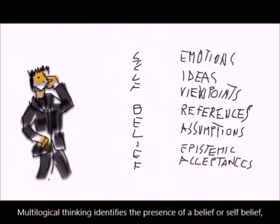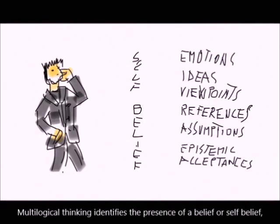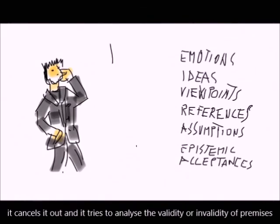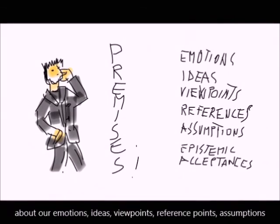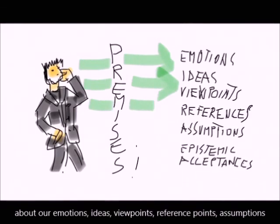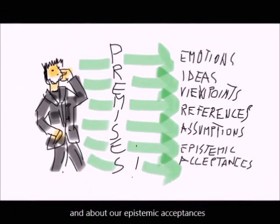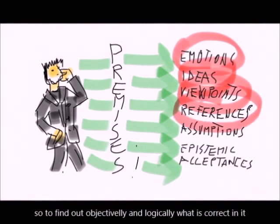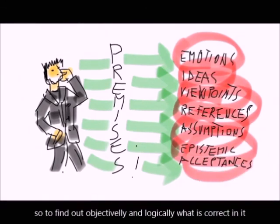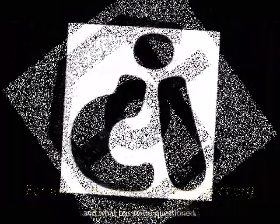Multi-logical thinking identifies the presence of a self-belief or collective belief, cancels that out, and tries to analyze the validity or invalidity of the premises about our emotions, ideas, viewpoints, reference points, assumptions, and epistemic acceptances — in order to find out objectively and logically what is correct and what has to be questioned.